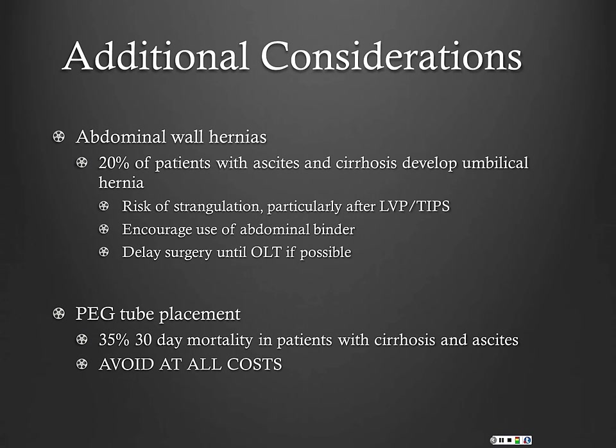We occasionally get consults for PEG tube placement in cirrhotic patients. Cirrhosis itself is not a contraindication, but cirrhosis with ascites is — there's a very high increase in mortality. You basically create a continuous path to the peritoneum for infection, and patients leak ascites around the G-tube. So if nutrition is an issue in a cirrhotic with ascites, don't ask for a PEG tube — consider an NJ tube or another approach instead. PEG tubes are simply not a good idea in these patients.